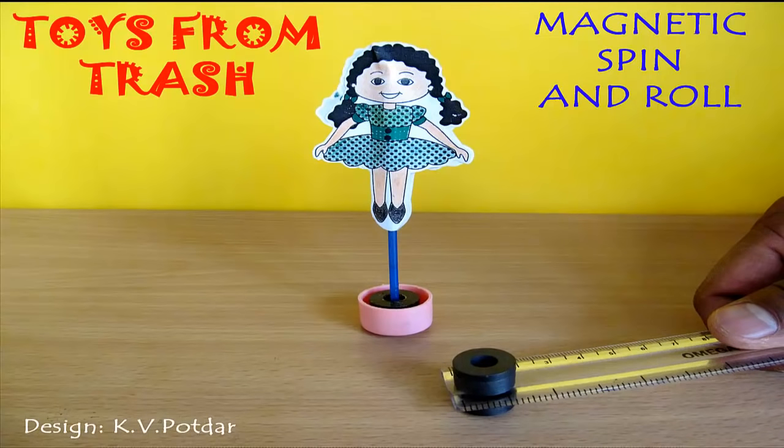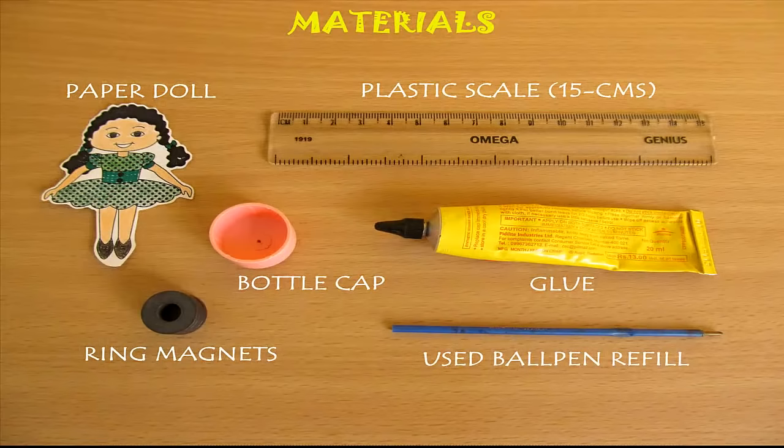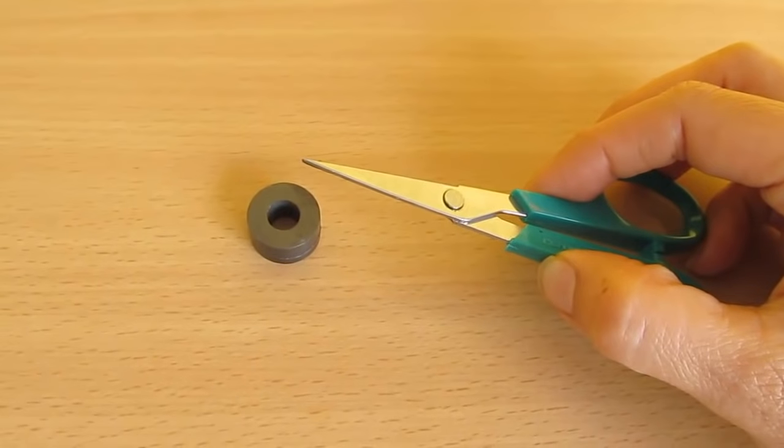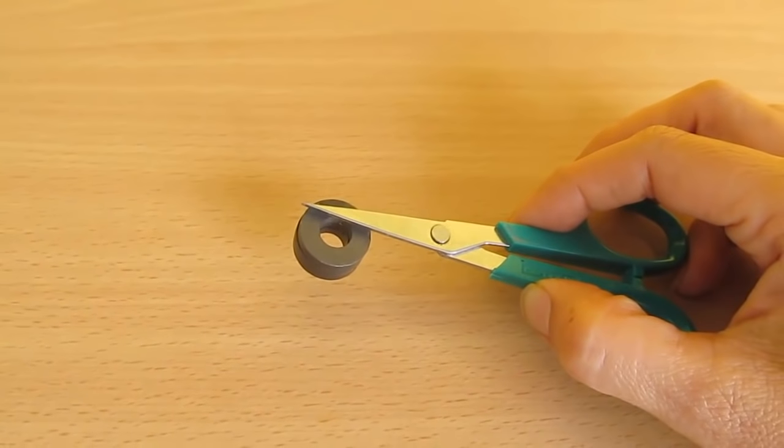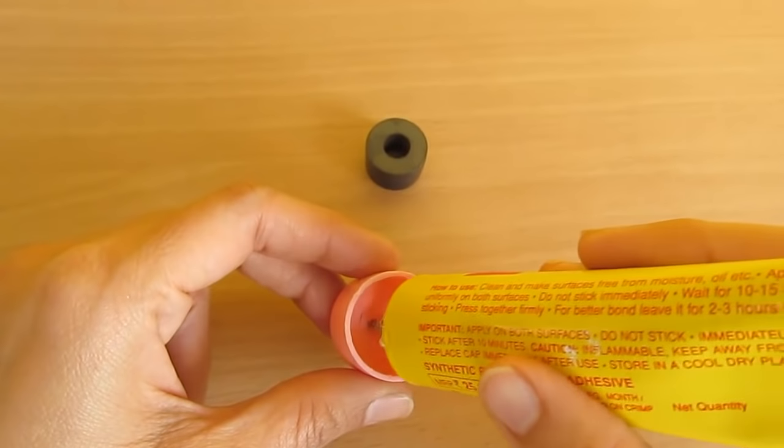You can use a few magnets to make this amazing spinning toy. You just need a plastic scale, a bottle cap, ring magnets, and some glue. First, take this magnet.